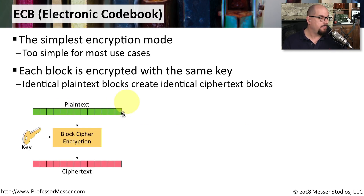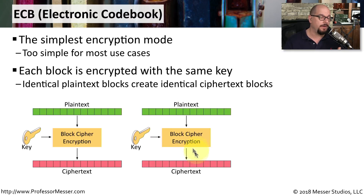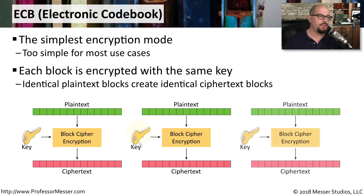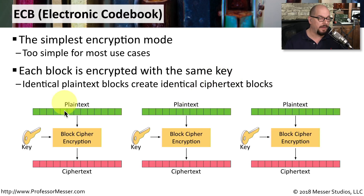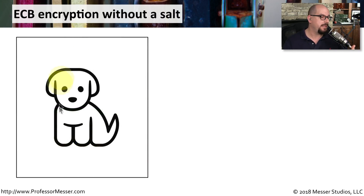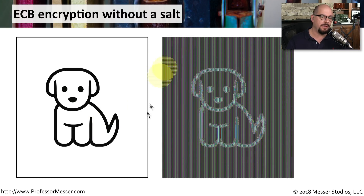With ECB, we start with a block of plain text and our key. We put both into the block cipher encryption and receive some cipher text. We take the next block of information and perform exactly the same function with exactly the same key. One of the challenges with ECB is that if we have blocks of plain text that are identical, and the key and encryption process are also the same, then the cipher text output from those identical plain text blocks will also be identical. If we look at this visually — for example, a picture that I might want to encrypt — you'll see that encrypting it using ECB without any randomization per block makes it very easy to discern what the original content was.